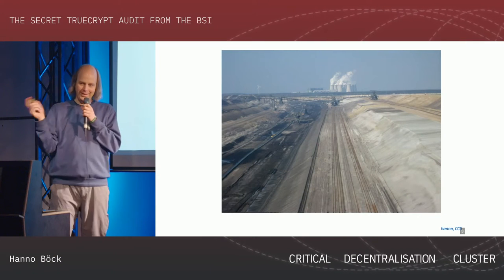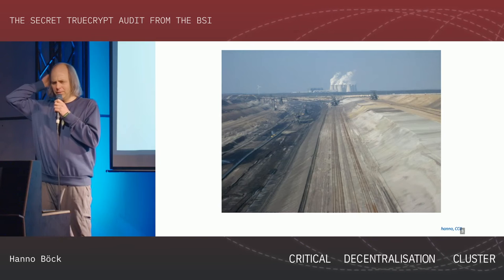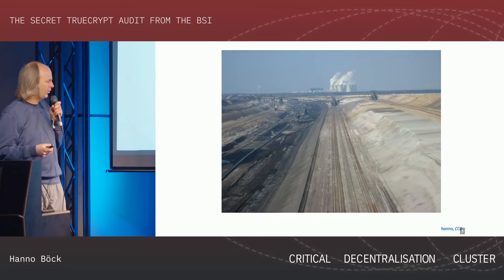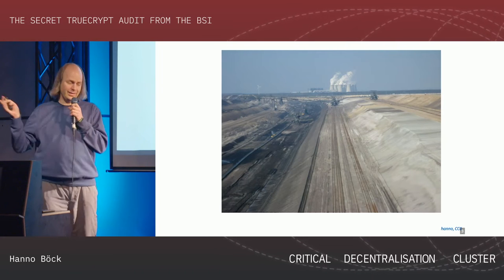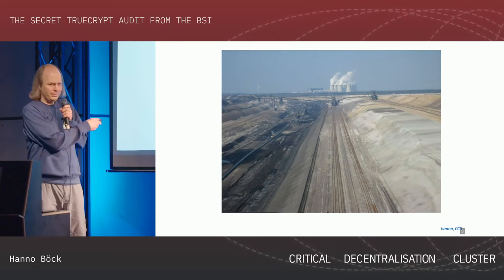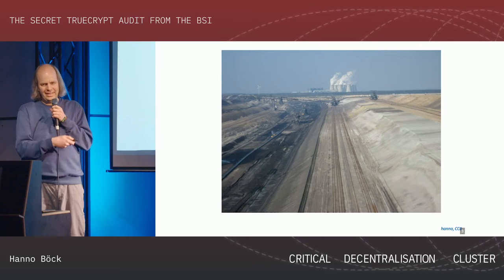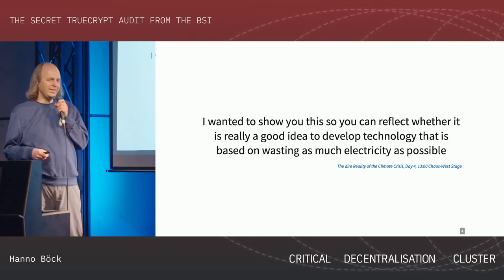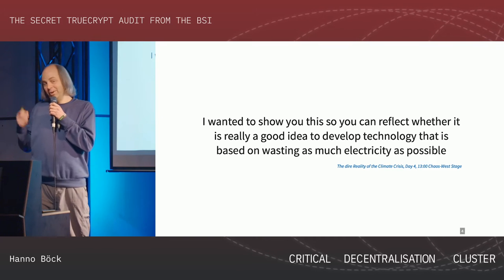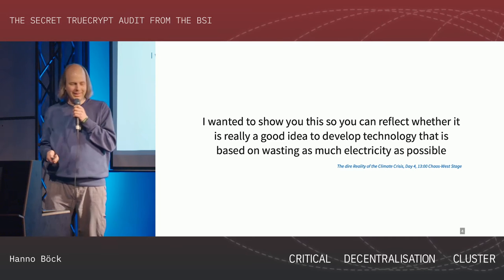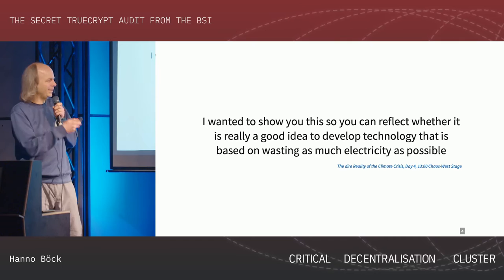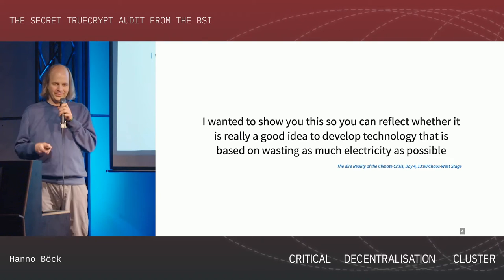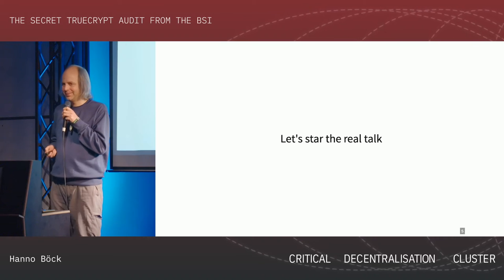So this has nothing to do with TrueCrypt, but I will get to that soon. This is a picture of an opencast coal mine in Eastern Germany in a place called Jentschwalde, which is one of the big crimes we do to our planet, also reflected in the motto of this Congress. There's a very similar mine very close to here - you can get there in half an hour. I just wanted to show you this so you can think about, when you're developing technology, if it's really a good idea to develop technology that's based on burning as much electricity as you can. I'll give another talk on day four about the climate crisis.